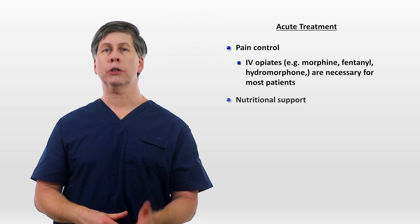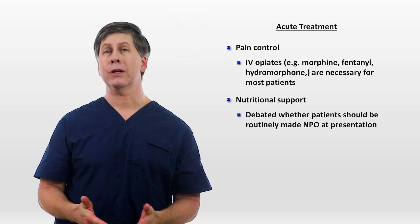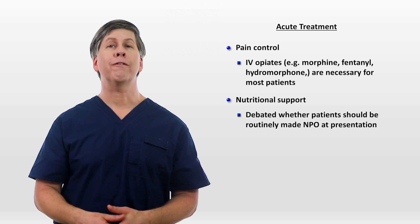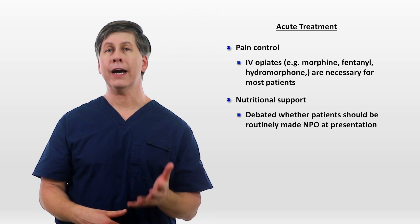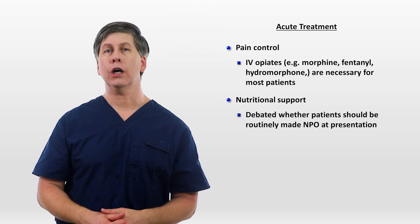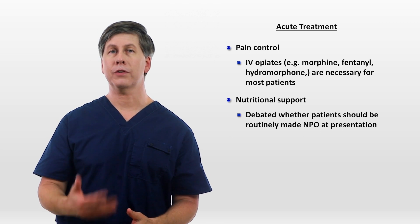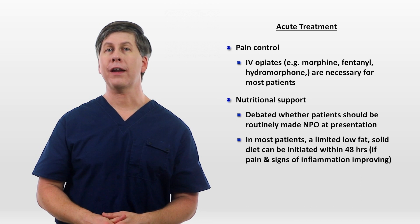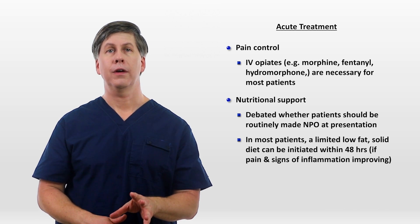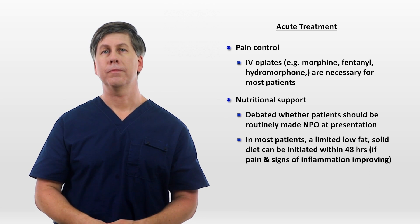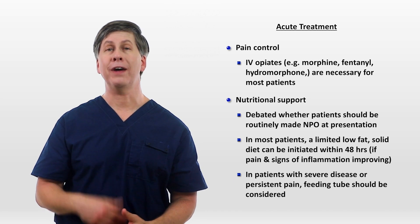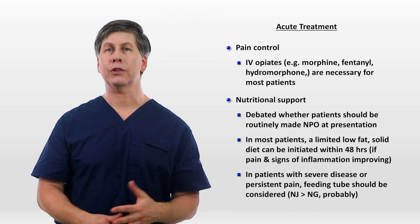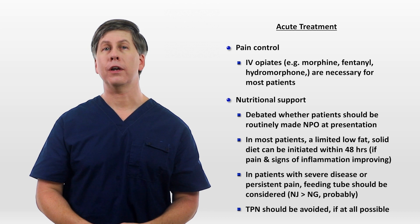The third component of treatment is nutritional support. It's debated whether patients should be routinely made NPO at presentation. The competing considerations are that oral intake of food can stimulate pancreatic secretions that could worsen inflammation, versus the fact that the GI mucosa requires nutrition to maintain its integrity, and there is a theoretical, unproven increased risk of infection in patients who are without oral nutrition for a prolonged period. In most patients, a limited, low-fat, solid diet can be initiated within 48 hours if pain and signs of inflammation are improving. Patients do not need to be fully pain-free in order to eat. However, in patients with severe disease or persistent pain preventing them from eating, a feeding tube should be considered. A nasal jejunal tube is probably better than a bedside nasogastric tube. TPN carries a lot of risk and should be avoided if at all possible.